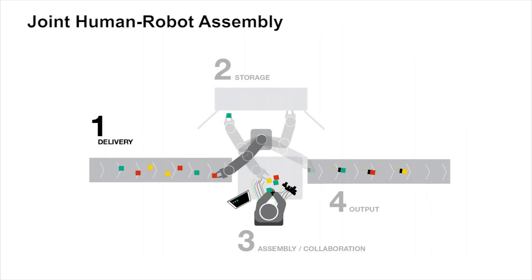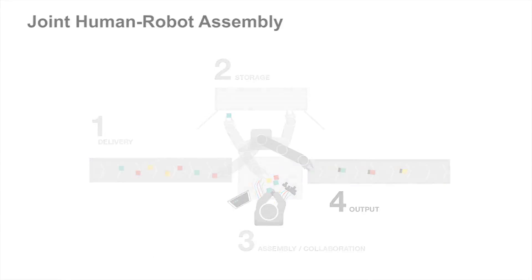First, the parts arrive at the workspace and are sorted into storage units by the robot. Then, the human assembles the product with parts provided by the robot and places it on a conveyor belt.